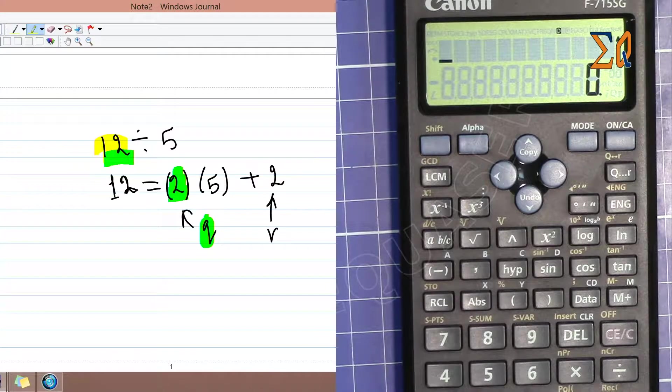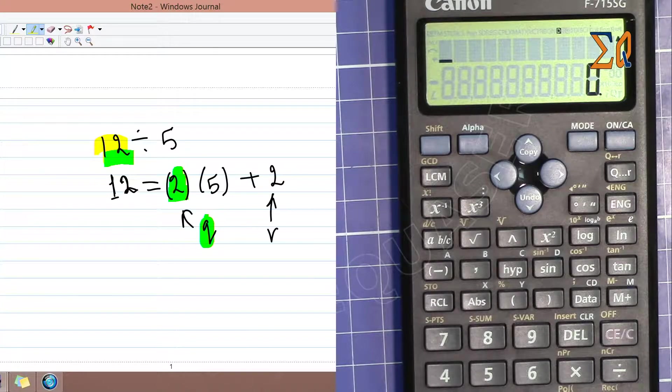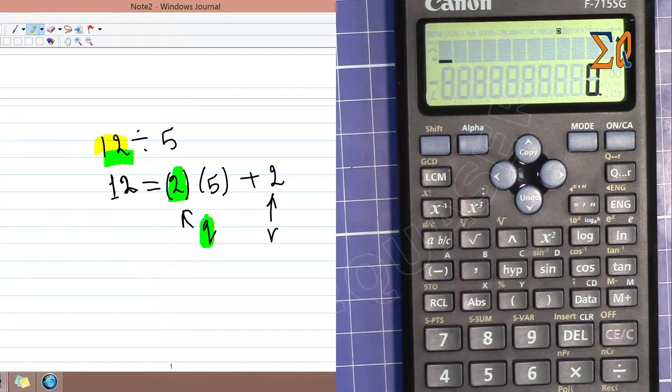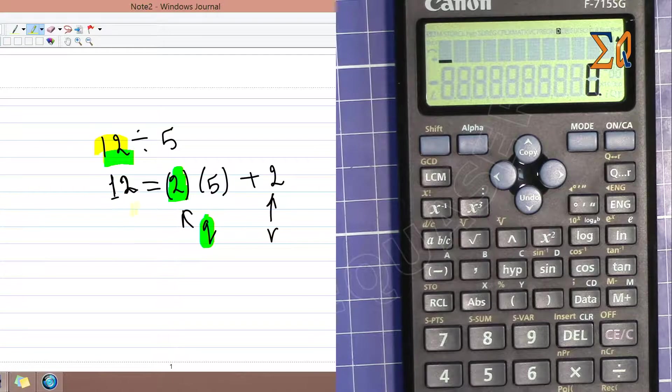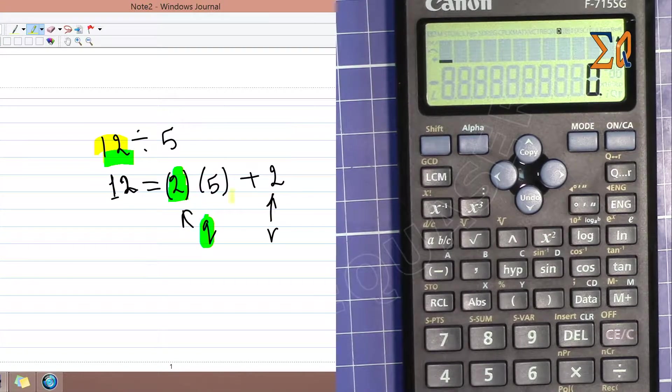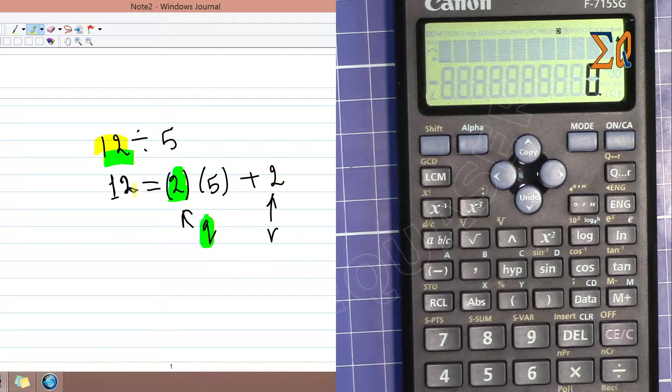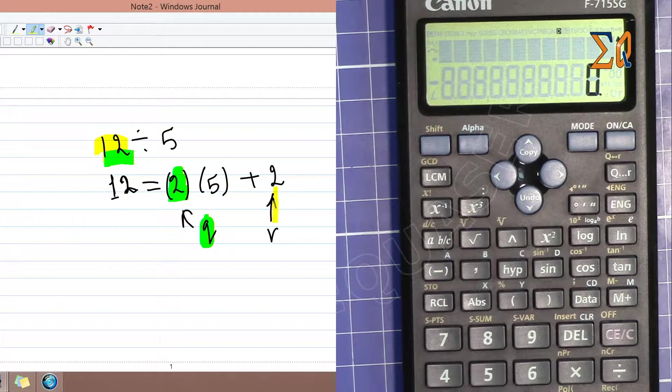When we have 12 divided by 5, here's the algorithm for division: 12 equals 2 times 5 plus a remainder. So 2 times 5 is 10, plus 2 equals 12. This 2 is called the quotient, and the other 2 is the remainder.